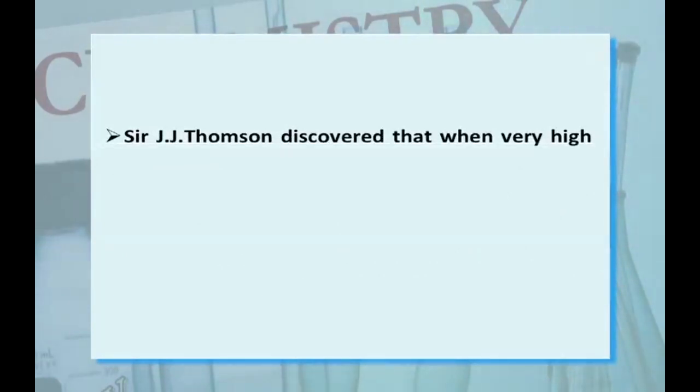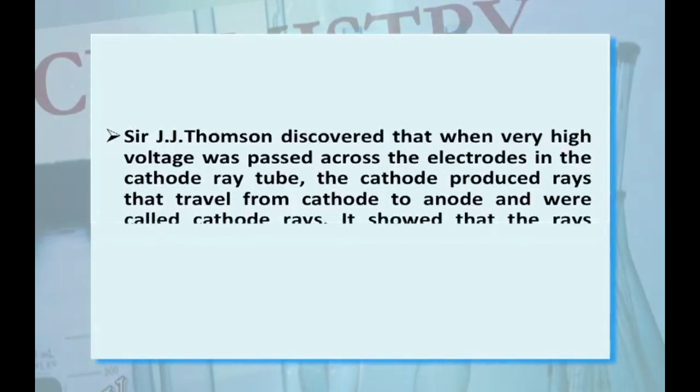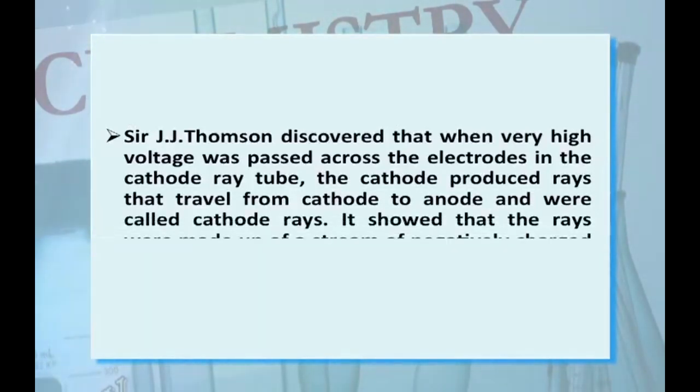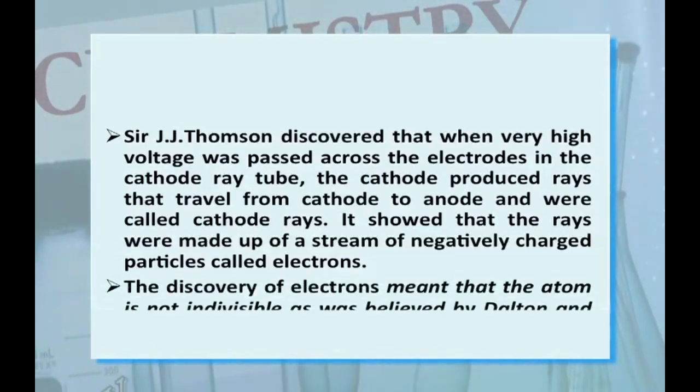Sir J.J. Thomson discovered that when very high voltage was passed across the electrodes in the cathode ray tube, the cathode produced rays that travel from cathode to anode and were called cathode rays. It shows that the rays were made up of a stream of negatively charged particles called electrons. The discovery of electrons meant that the atom is not indivisible as was believed by Dalton and others.